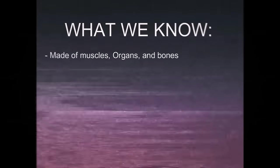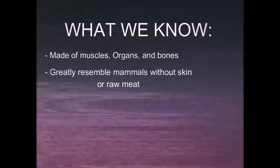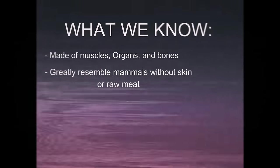These creatures are comprised mainly of muscle tissue, organs, and bones. They greatly resemble animals with no skin or store-bought meat. Because of these characteristics, they have been named accordingly as Vita Carnies.